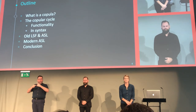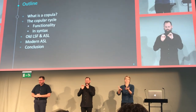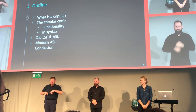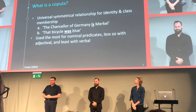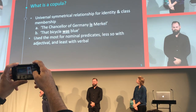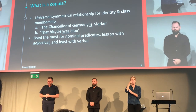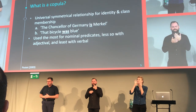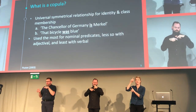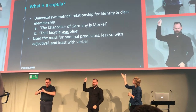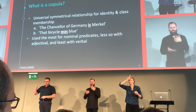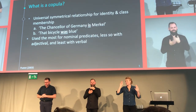We're going to be investigating the copular cycle. First of all, I would like to give you some background information before I provide the data. The copula is a universal symmetrical relationship between an identity and a class membership. Let's look at example A on the slide — there is an individual, the Chancellor of Germany, which is Angela Merkel.